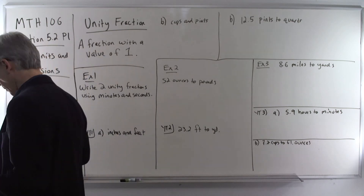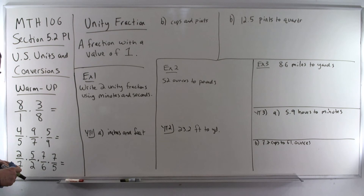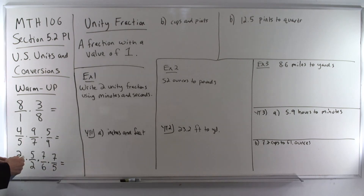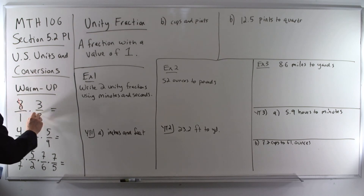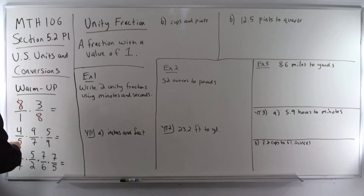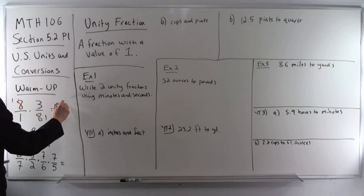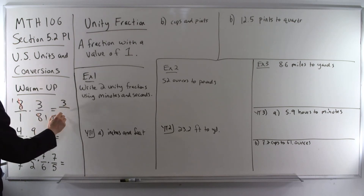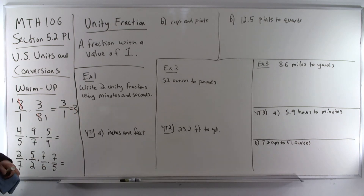Let's start with a warm up. As we saw last time, we're multiplying fractions. You can cancel on top and bottom if you have a matching number. So here the 8's are going to cancel, and those turn into 1's when we cancel them. Now we're multiplying straight across: 1 times 3 gives us 3 on top, 1 times 1 is 1 on the bottom, and we can simplify that to 3.